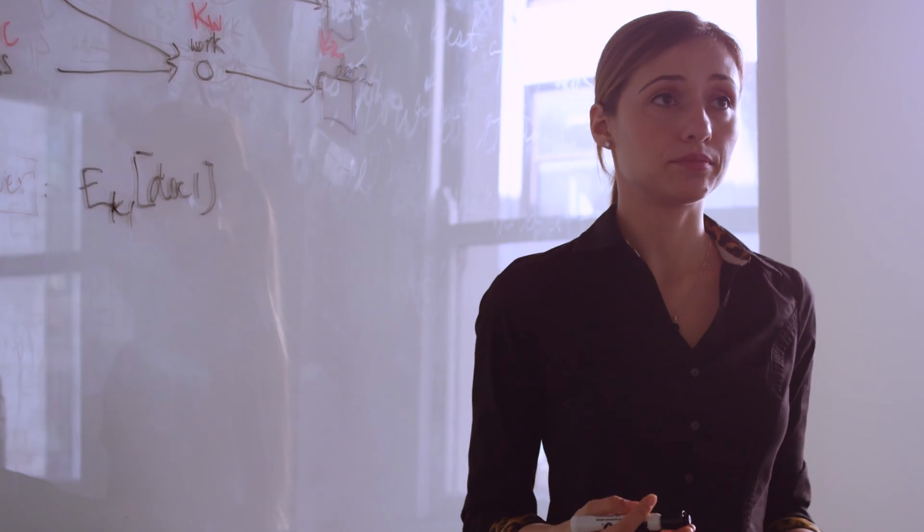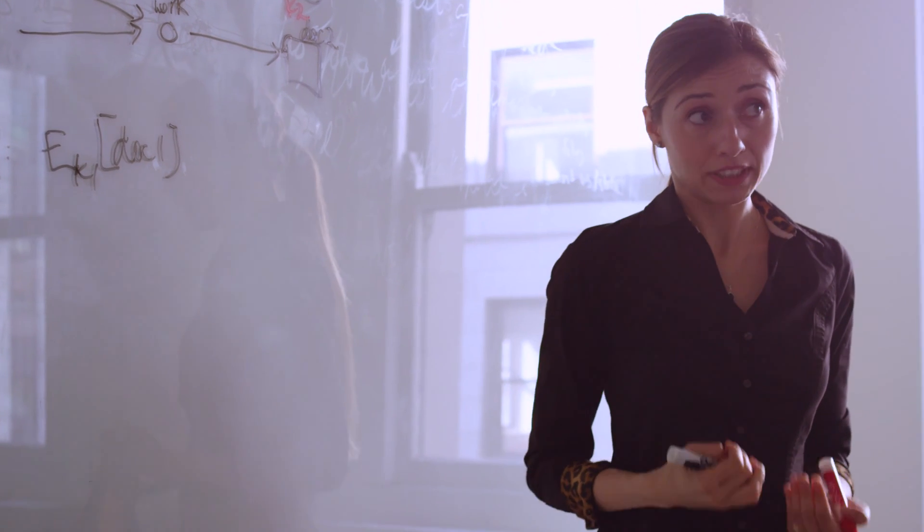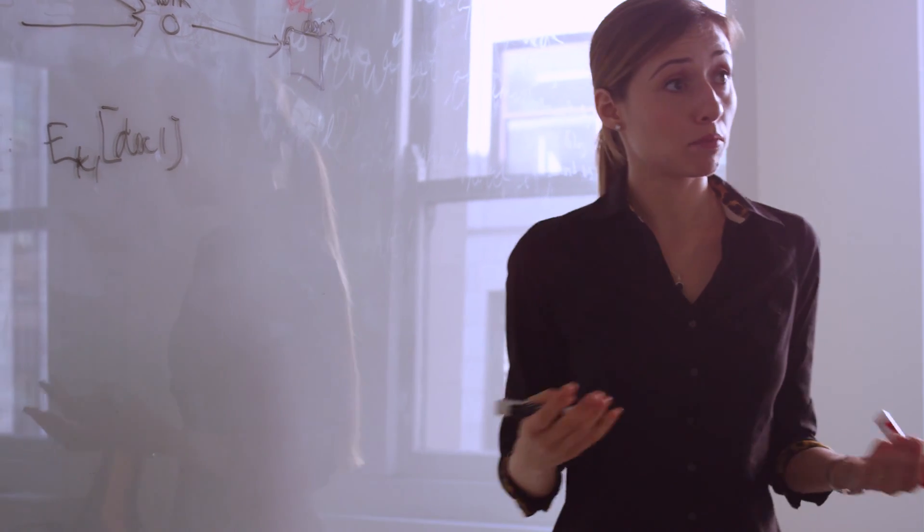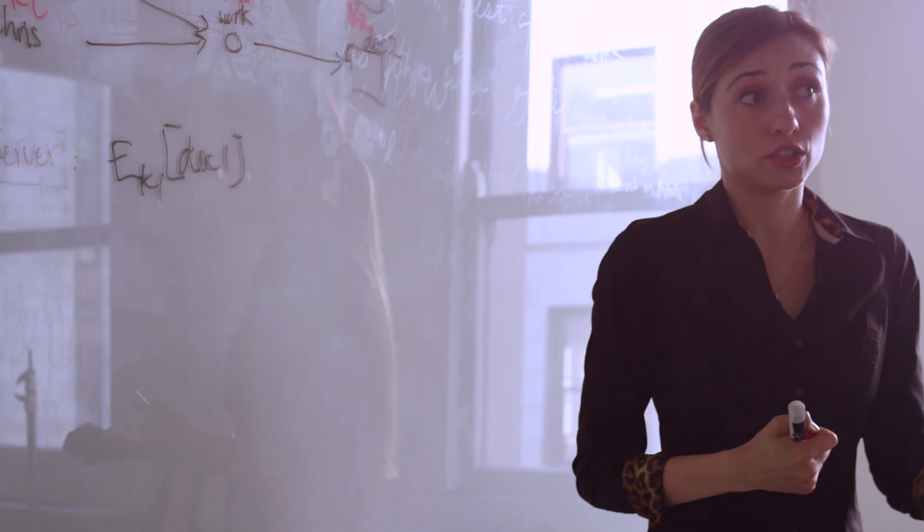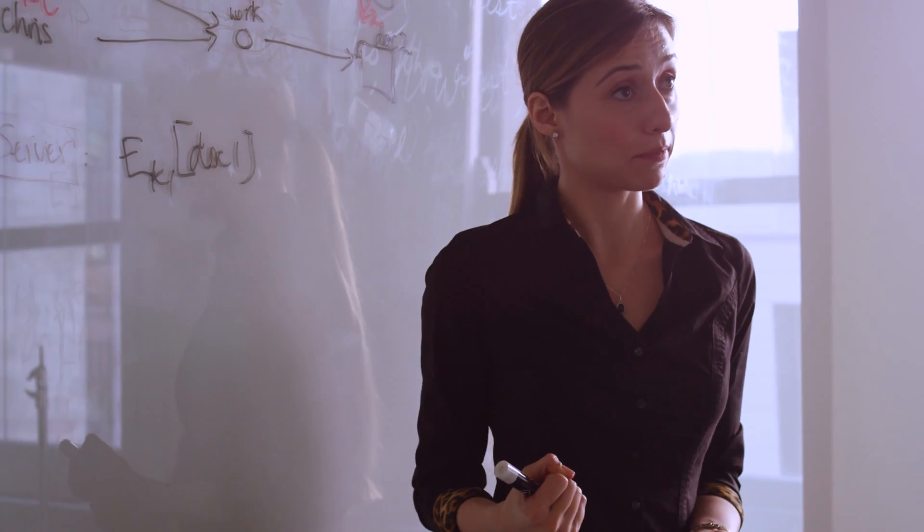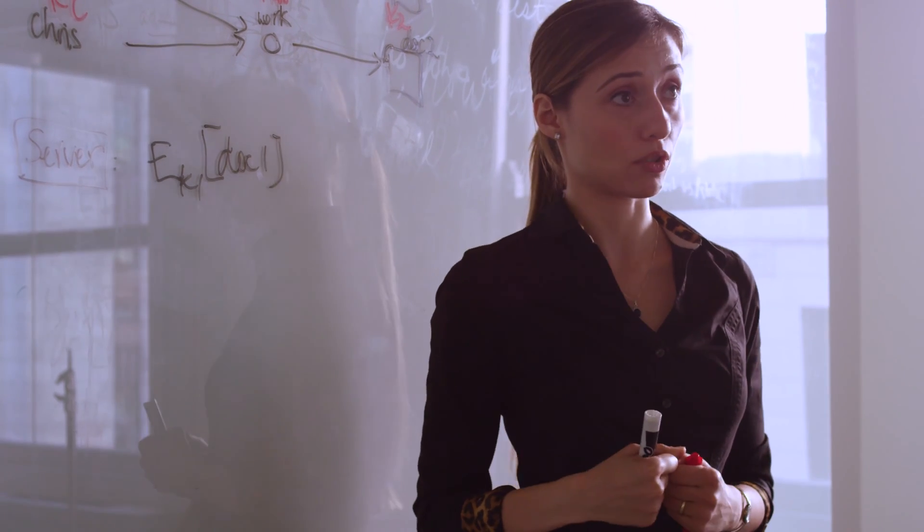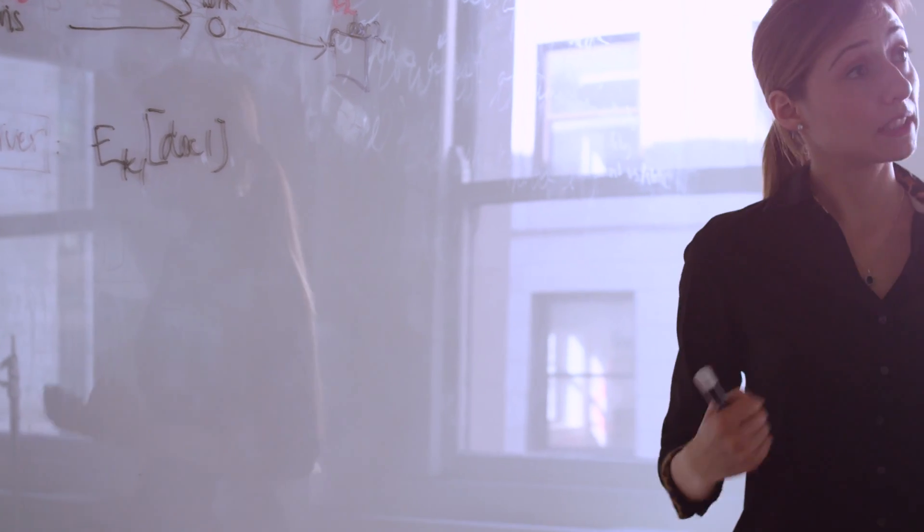But the question is, where is key 1? It would be convenient to store it at the server so that when Alice and Bob come online, they can access it. Especially if Alice just created this document, how would Bob otherwise get to the key? Maybe Alice is not online when he comes online. For this, we use wrapped keys.